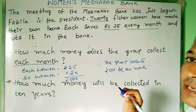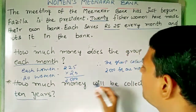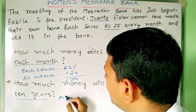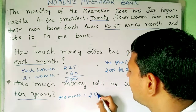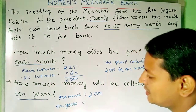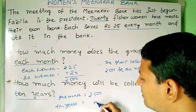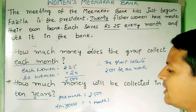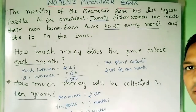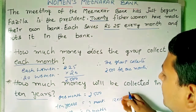Now how much money will be collected in 10 years? For one month they collect ₹500. For 10 years, we first need to know how many months are in 10 years. One year has 12 months, so 10 years has 12 × 10 = 120 months.